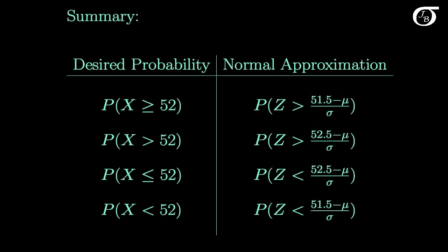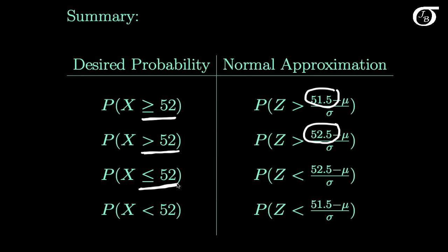To summarize: for P(x ≥ 52), include all of 52 going right, so start at 51.5. For P(x > 52), exclude 52 going right, so start at 52.5. For P(x ≤ 52), include all of 52 going left, so start at 52.5. For P(x < 52), exclude 52 going left, so start at 51.5. I strongly recommend understanding the underlying logic rather than memorizing these rules.